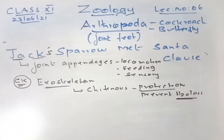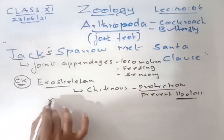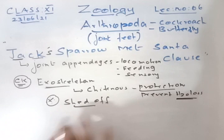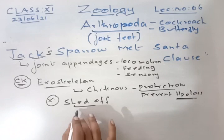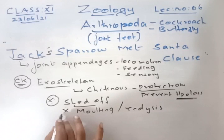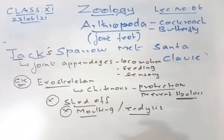Another important point about the exoskeleton: when the animal is developing, it is shed off periodically. This process is called the molting process or ecdysis. Define molting or ecdysis — this is an important exam question.